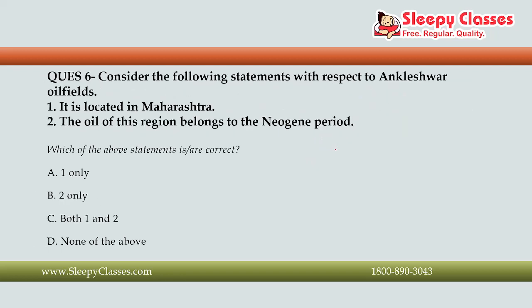The next question asks you to consider the following statements with respect to the Ankleshwar oil fields. First, it is located in Maharashtra. Second, the oil of this region belongs to the Neogene period. Which statements are correct? The correct answer is Option D, none of the above — because the Ankleshwar oil fields are not located in Maharashtra but in Gujarat, and the oil belongs not to the Neogene period but to the Eocene period.